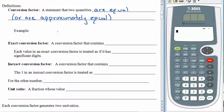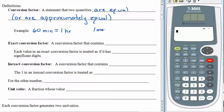Because of course we have both types. You already know that 60 minutes is exactly equal to one hour — that's how an hour is defined. But one meter is a metric unit, and to convert it over to a US unit we're only going to end up with an approximate result. So a meter is about 1.09 yards.